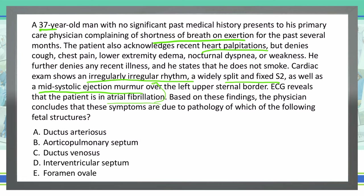Let's go through these together. Starting with A, ductus arteriosus — this is what connects our systemic circuit backwards into the pulmonary circuit. During fetal life it pushes blood away from the pulmonary circuit into the systemic circuit, and then once a baby is born, that reverses due to the higher pressures in the systemic circuit. However, this doesn't cause a mid-systolic ejection murmur; it causes more of a machine-like murmur, so that's not an option I would choose.